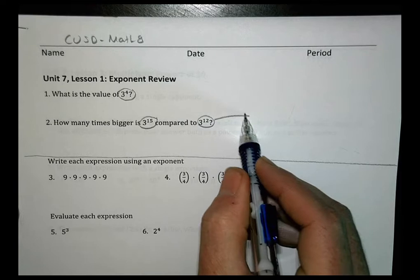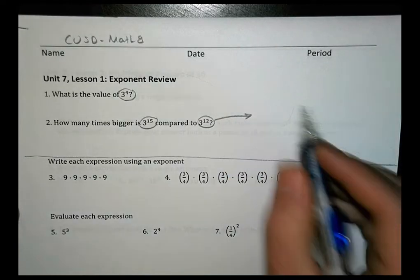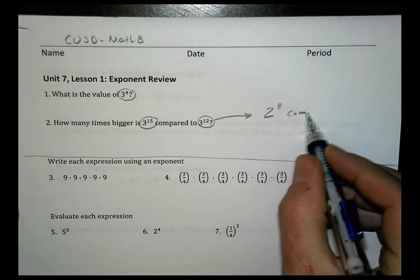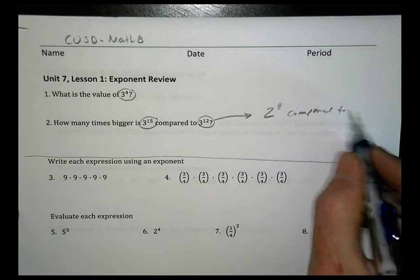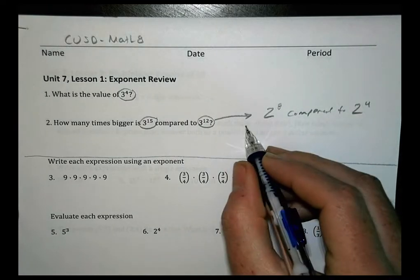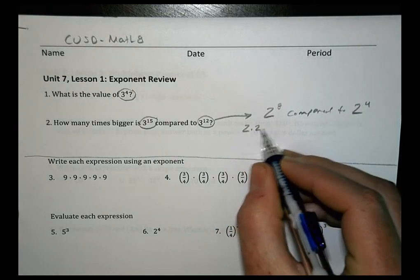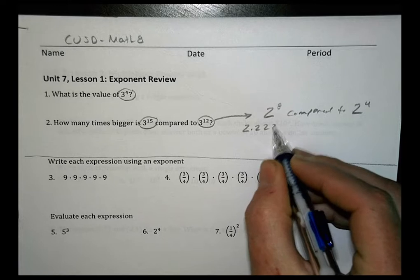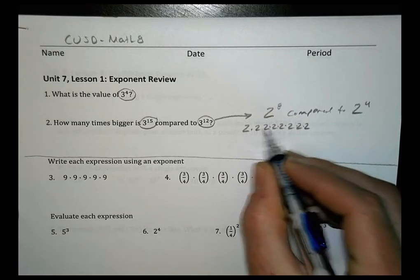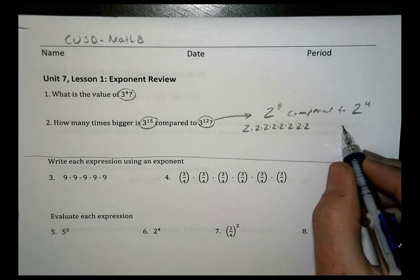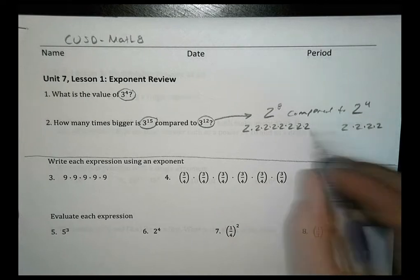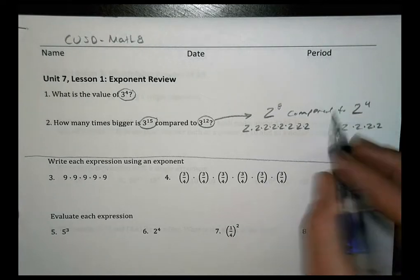So what they're asking you to do here, for example, is to compare something like, let's say I had 2 to the 8th power compared to 2 to the 4th power. So 2 to the 8th power is like saying 2 eight times: 1, 2, 3, 4, 5, 6, 7, 8, all multiplied together. I'm comparing that to 2 to the 4th power: 1, 2, 3, 4. So there's the two different things I'm comparing there.